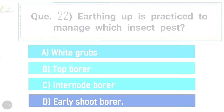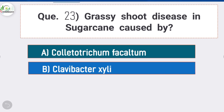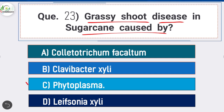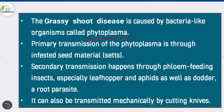Question 23: Grassy shoot disease in sugarcane is caused by — option C is correct: phytoplasma. The disease is caused by a bacteria-like organism called phytoplasma. Primary transmission is through infested seed material; secondary transmission happens through feeding insects, especially leafhoppers and aphids, as well as through root parasites. It can also be transmitted mechanically by cutting knives.